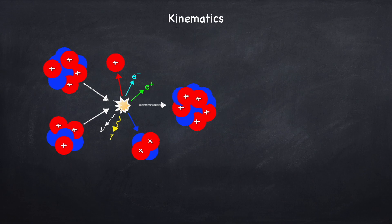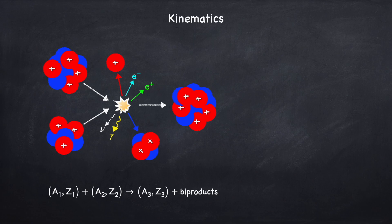This could be a photon, it could be electrons and positrons, which are always accompanied by neutrinos, it could be a proton, or it could even be a heavier nucleus. Which particle is released will depend on the specifics of the two nuclei being fused. Overall, the process takes two nuclei with atomic number A and charge Z — where A is the total number of nucleons, meaning protons plus neutrons — and they come together into a third nucleus with some other atomic number A and charge Z, plus whatever byproducts are released.